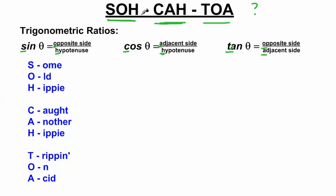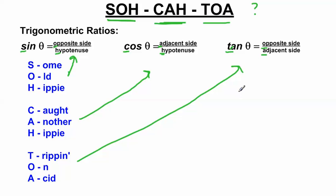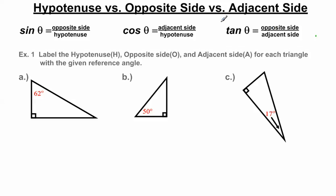Some people like to make a phrase out of SOH-CAH-TOA, where each letter becomes a word. One that I teach my students is: "Some Old Hippie Caught Another Hippie Trippin On Acid." Some Old Hippie = sine, opposite, hypotenuse. Caught Another Hippie = cosine, adjacent, hypotenuse. Trippin On Acid = tangent, opposite, adjacent. These words map to the trigonometric ratios and might help you remember how to apply them.